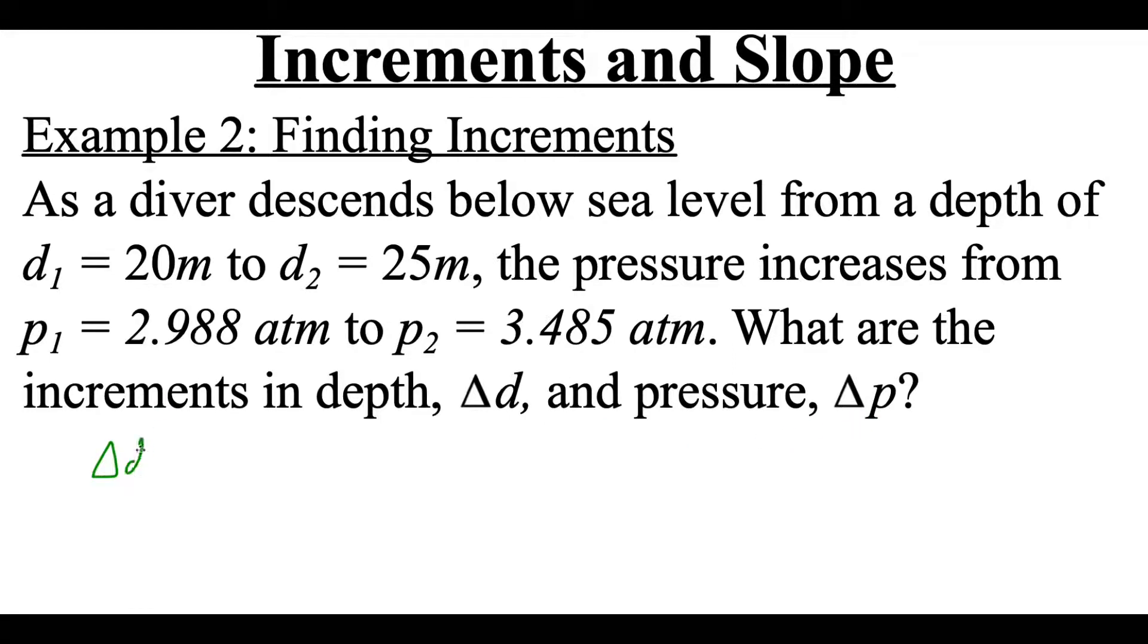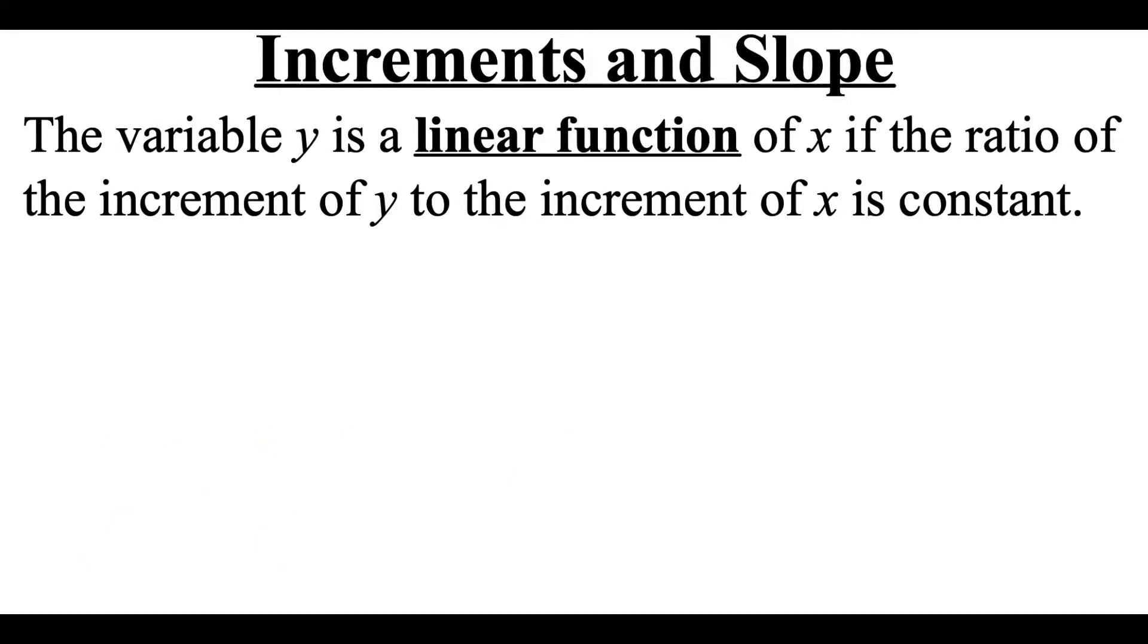So if we look at Δd, we're going to take that second depth and subtract off the initial depth. So he ended at 25 meters and he started at 20 meters, and we subtract those and get a Δd or a change in depth of five meters. Now similarly, if we wanted to calculate the change in the pressure or Δp, we would take that ending pressure minus the initial pressure, so the 3.485 minus the 2.988. We subtract those and we get about 0.497 atmospheres as our change.